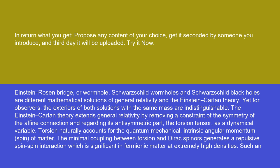The Einstein-Cartan theory extends general relativity by removing a constraint of the symmetry of the affine connection and regarding its anti-symmetric part, the torsion tensor, as a dynamical variable. Torsion naturally accounts for the quantum-mechanical intrinsic angular momentum, or spin, of matter.